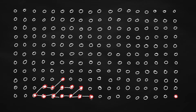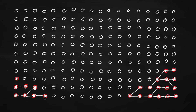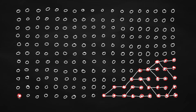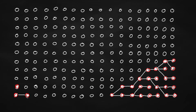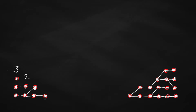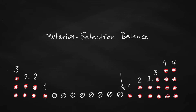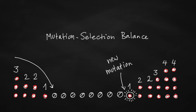It may then take a while before the mutation occurs again in the population. Let's focus on how many mutants there are in the population — the number goes up and down. This dynamic equilibrium is called mutation-selection balance: mutation is needed to create the mutations, and selection purges them from the population.